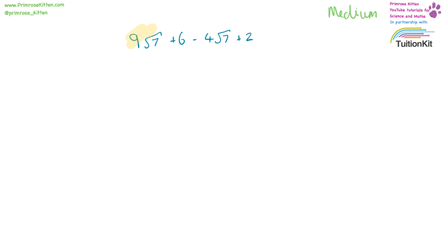9 square root 7 minus 4 square root 7, and plus 6 plus 2. 9 square root 7 minus 4 square root 7 gives us 5 square root 7. Plus 6 plus 2 gives us plus 8. So the answer is 5 square root 7 plus 8.